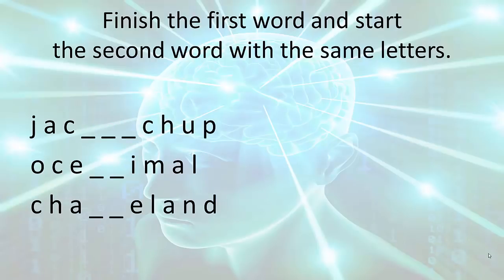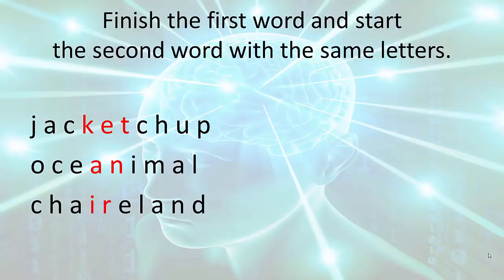Ten seconds to do the first group. And the three letters are K-E-T. The first word, of course, is jacket. The second word is ketchup. Now, you need two letters to finish the second word group. Here's 10 seconds. And the two letters are A-N. The first word is ocean. The second word is animal. Let's continue. Ten seconds to do the third group. And the third words are chair, Ireland. Chair is the first word. Ireland is the second.